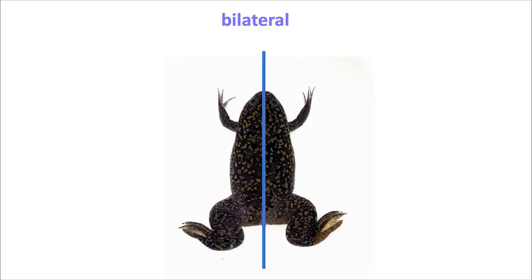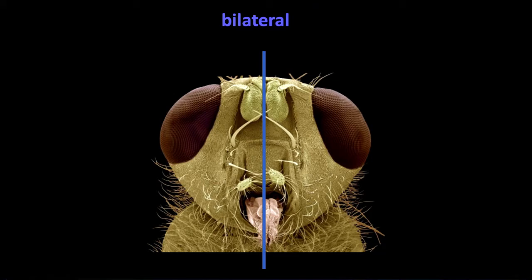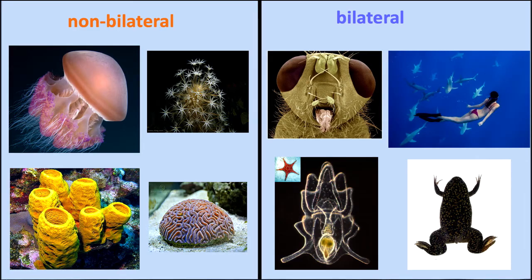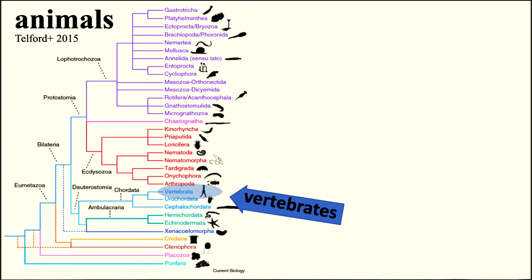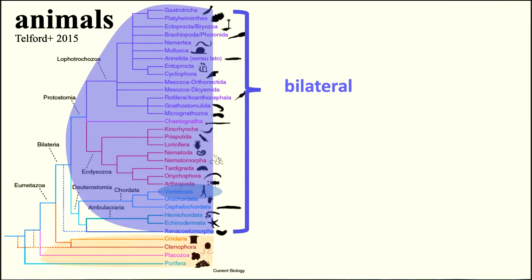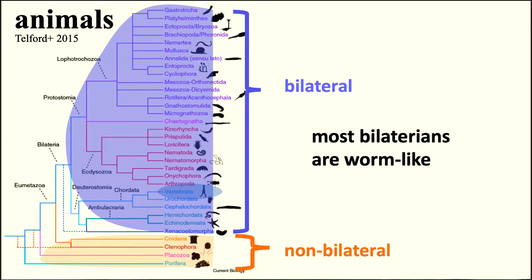What about bilateria? Bilateral things are mirror images — one side to the other — you can draw a line so it's like a mirror image. We divide things into non-bilateral and bilateral things, and bilateral things evolved from non-bilateral things, which today are shown in those pictures. Here's a phylogenetic tree — here are the vertebrata, the bilateral things, and the non-bilateral things deeper in the tree.